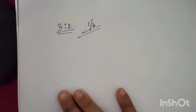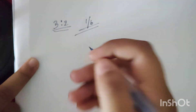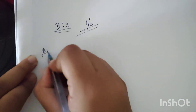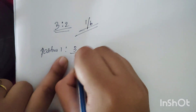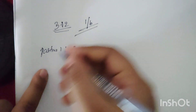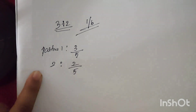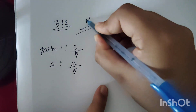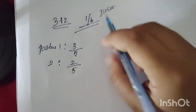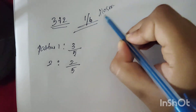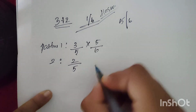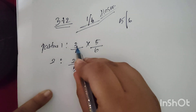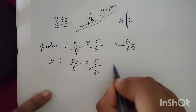The remaining balance after giving Hasna 1/6 is 5/6. We distribute 5/6 between the two partners in their old ratio 3:2. So we multiply: 3 into 5 is 15 by 30, and 2 into 5 is 10 by 30. Hasna's share is 1/6, which equals 5 by 30.